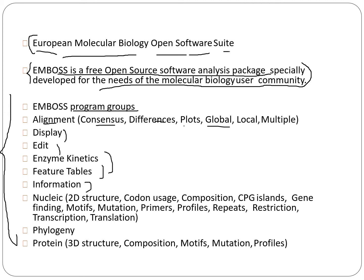EMBOSS program groups include alignment, consensus, differences, global, local, multiple, displays, edit, enzyme, contacts, feature tables, information, nucleic acid, 2D structure, 3D, mutation, primers, profiles, repeats, restrictions, transcription, translation, phylogenetics, as well as protein structure predictions.